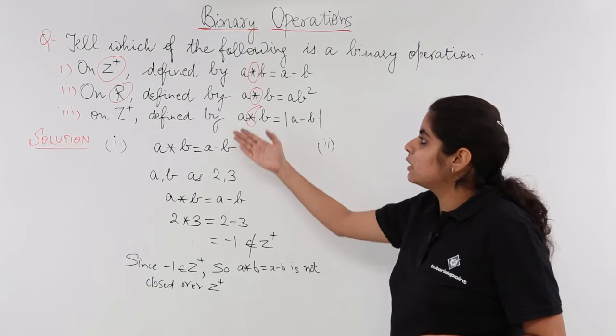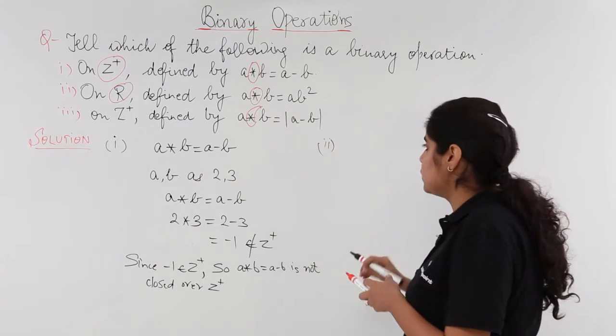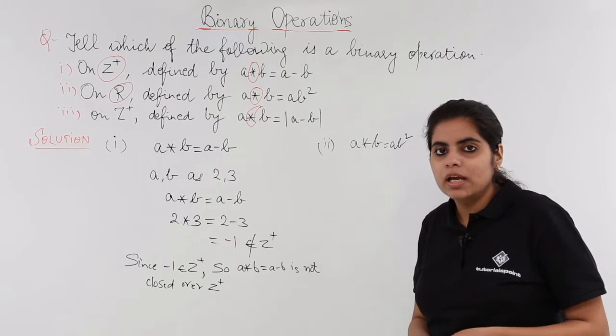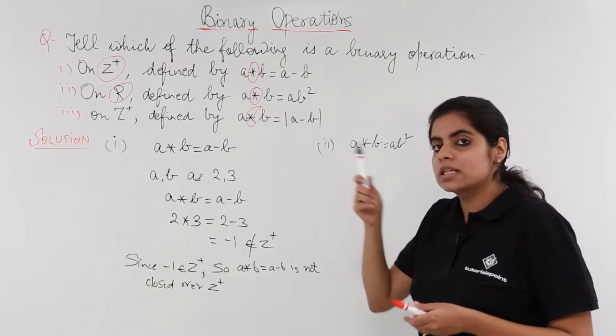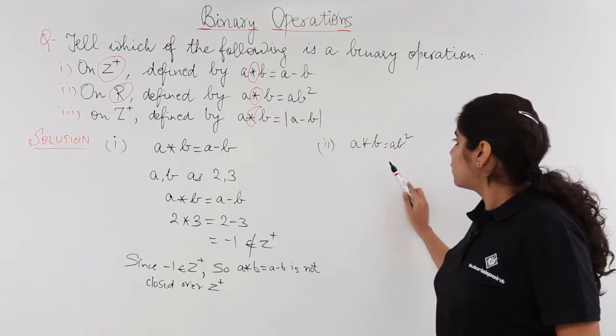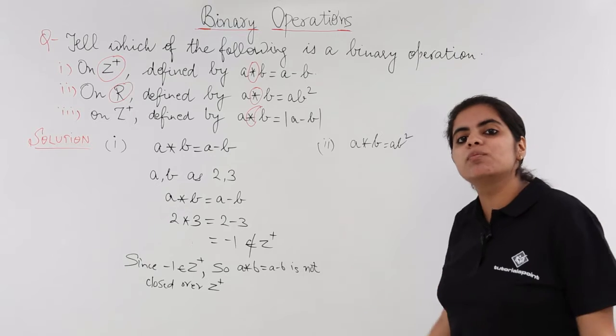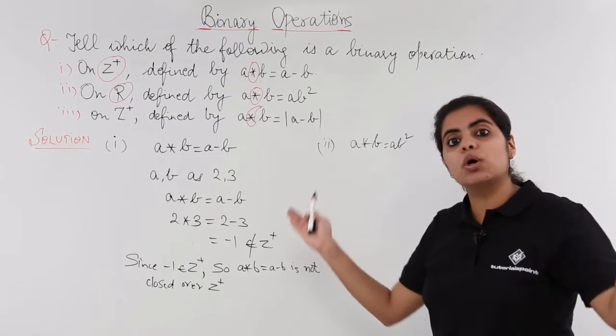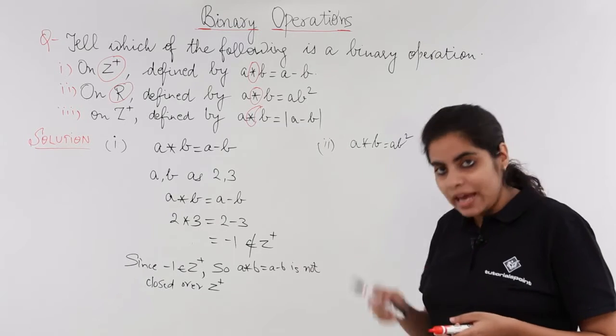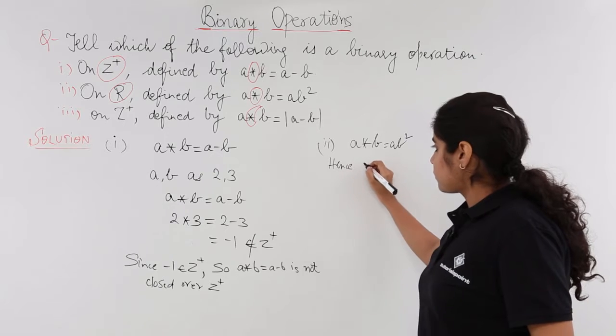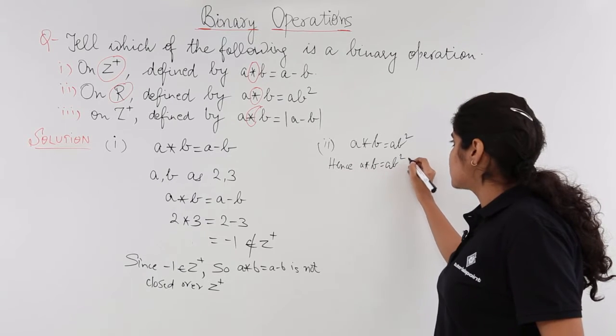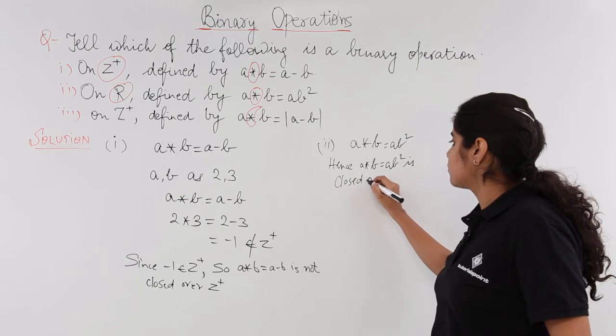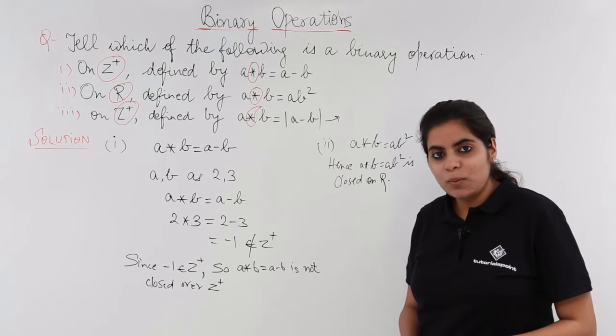Moving back to the question, it asks me for real numbers, A star B is equal to AB square. Now, A, B, all things real given to me, now real multiplied by real square will always give me what? It will give me real only. So there is no question of obtaining anything out of the boundary of real numbers. Hence, A star B is equal to AB square is closed on real. So it is a binary operation on R.